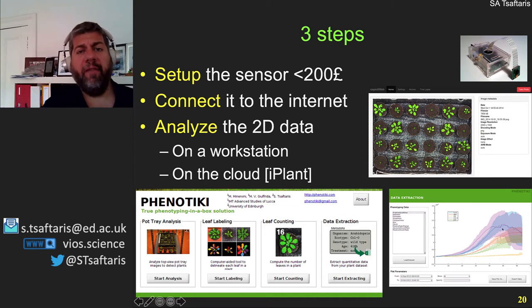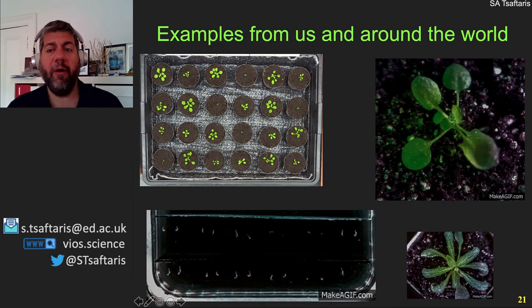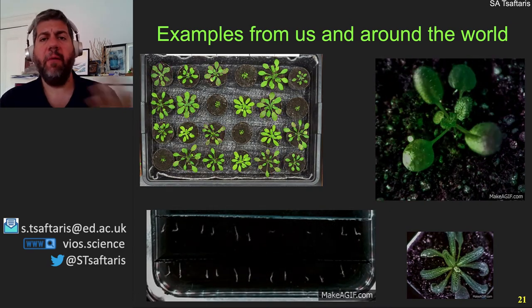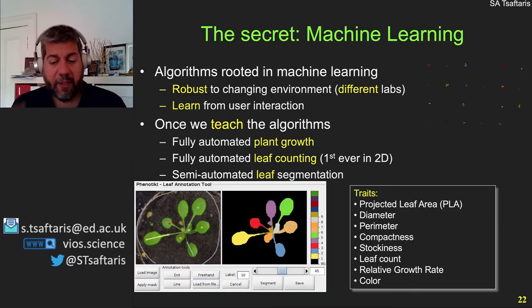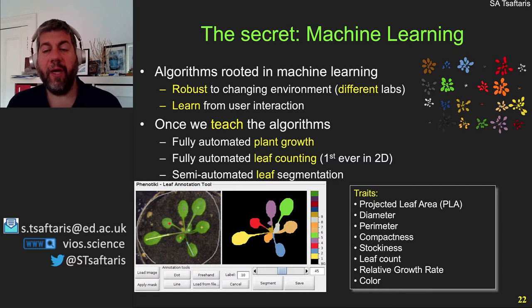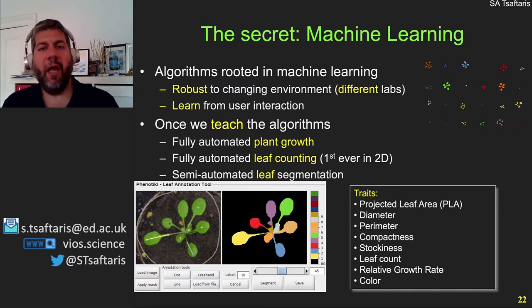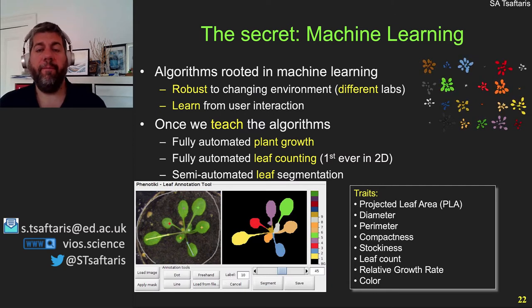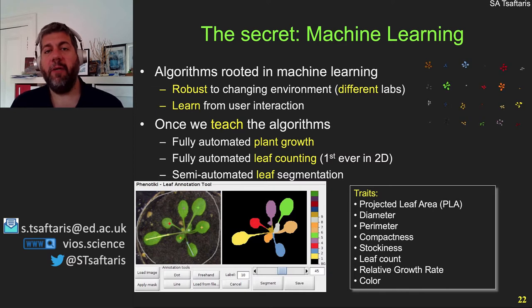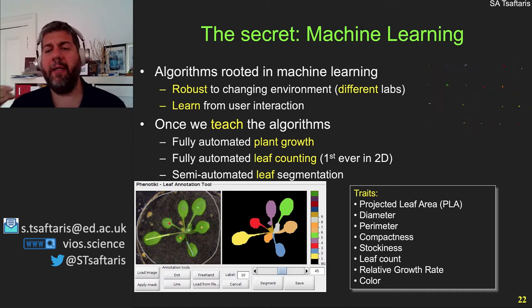Many people have used Phenotyky, particularly the sensor, as a way to collect data. The hardware is open source — anybody can modify and improve it. Inside the software, the secret is algorithms rooted in machine learning. By having machine learning, we can be robust to changing environments in different labs, and we can also learn from user interaction and adapt. Once we teach the algorithms, we can do fully automated plant growth measurements, fully automated leaf counting, and semi-automated leaf segmentation from simple 2D optical images taken with the Raspberry camera. We can extract several traits like projected leaf area, diameter, compactness, and stockiness.